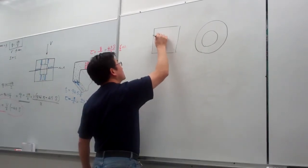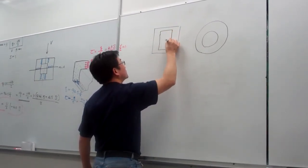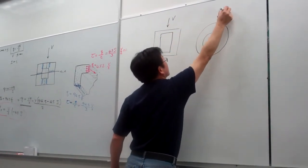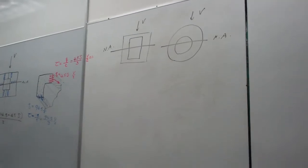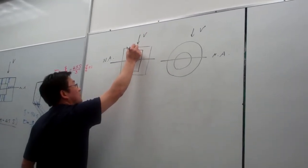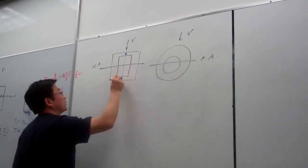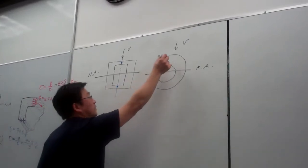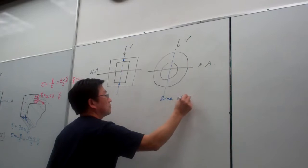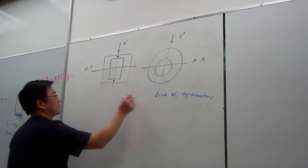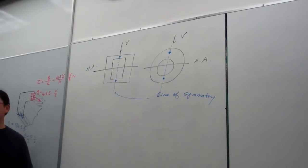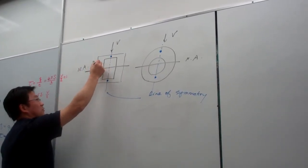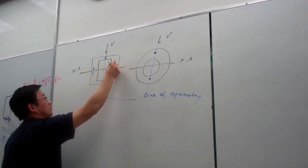For box-like structure, if this is V, neutral axis, the distribution of the shear flow will be like this. This is the line of symmetry, starting from here, zero. So the shear stress on the line of symmetry equal to zero, and then on the sides, the shear stress must be in the direction of the transverse loading.